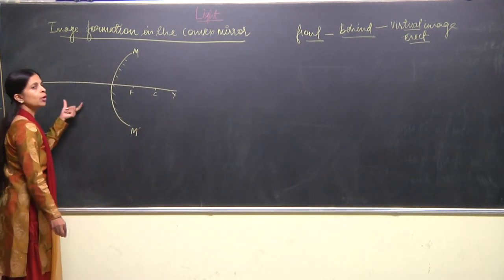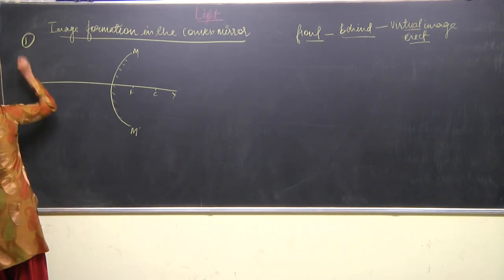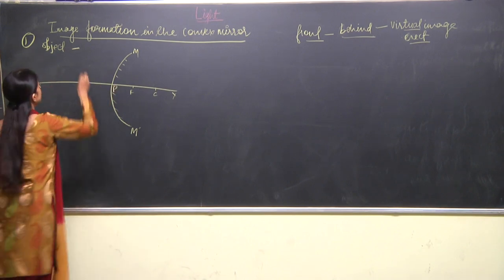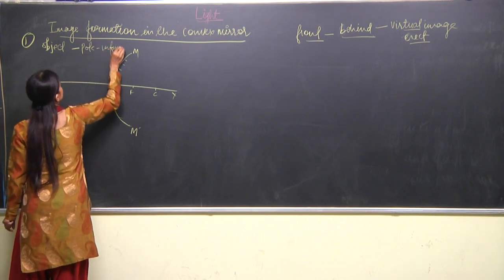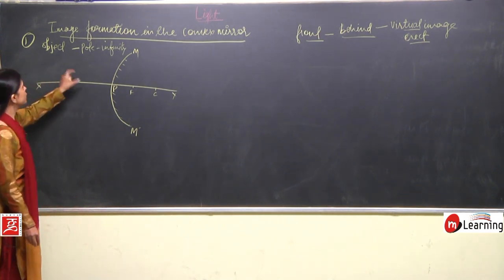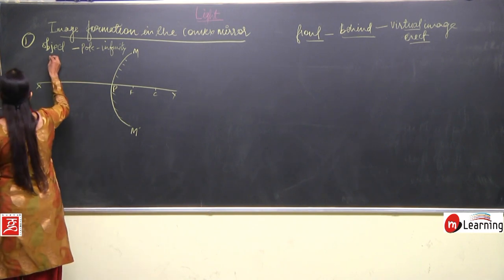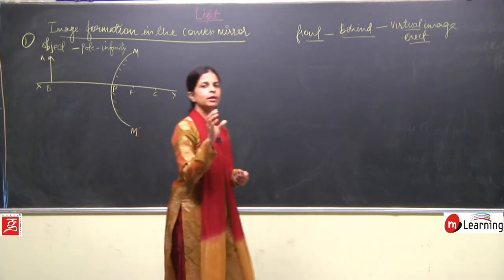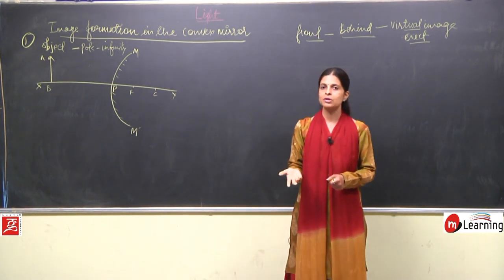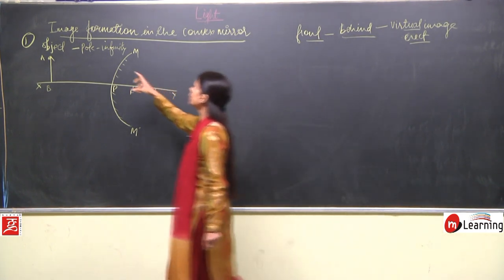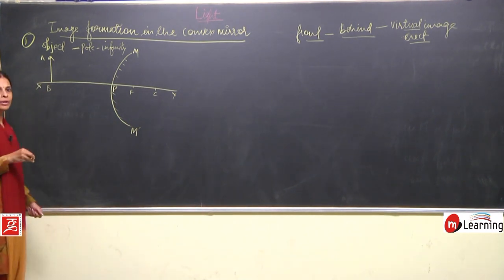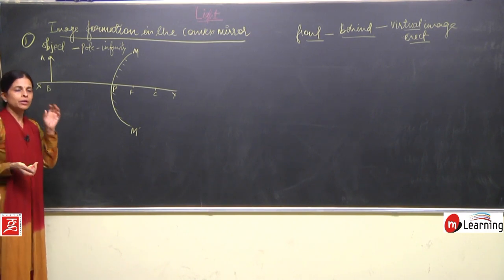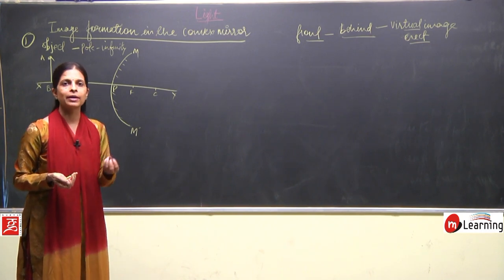Now we will talk about two cases in the convex mirror. In the first case, we keep the object anywhere between the pole and infinity. Let me keep the object here — this is my object AB. When making ray diagrams, always name the object. We will be discussing only two rays to minimize confusion and make the ray diagrams easy to understand.